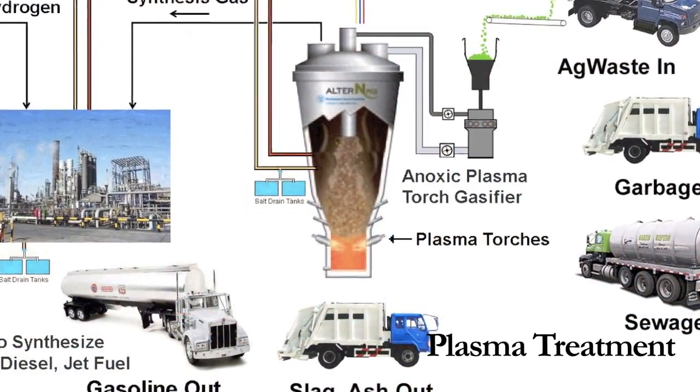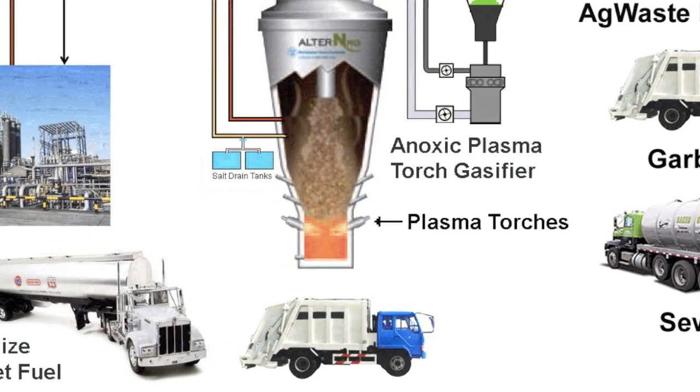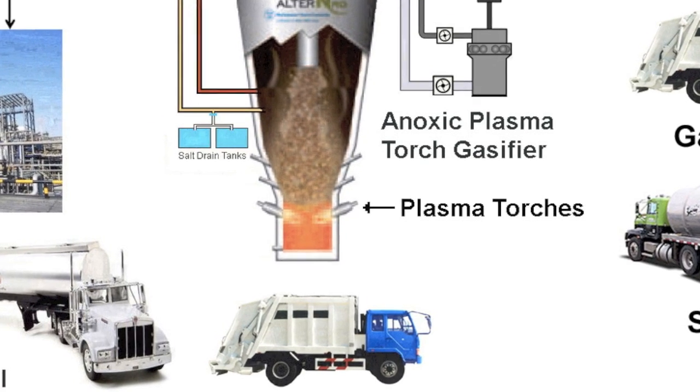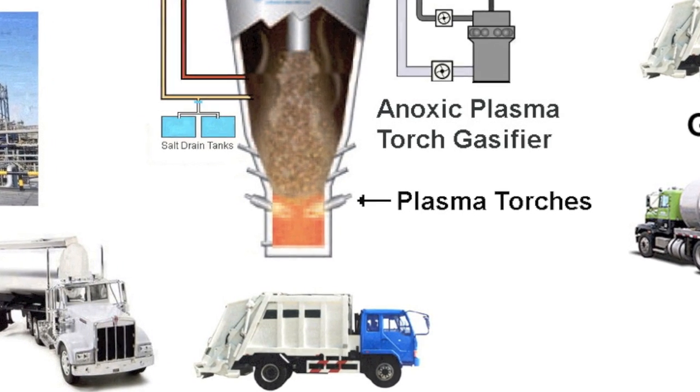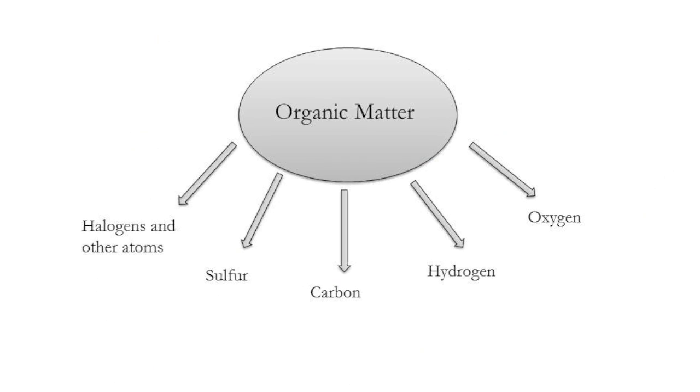Step two, plasma treatment. In this step, the shredded waste is conveyed to the plasma reactor, where it will be gasified by means of a thermoplasma torch. The extremely high temperature of the plasma torch causes disintegration of materials into their elemental components.